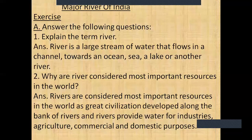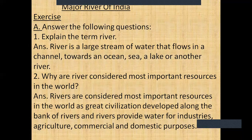Now we'll discuss the exercises of the chapter Major Rivers of India. Exercise A: Answer the following questions. Question 1: Explain the term river. A river is a large stream of water that flows in a channel towards an ocean, sea, a lake, or another river. Question 2: Why are rivers considered the most important resources in the world? Rivers are considered most important because great civilizations developed along their banks, and rivers provide water for industries, agriculture, commercial, and domestic purposes.